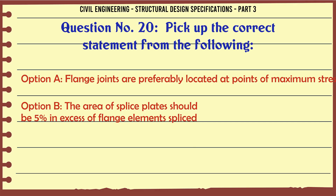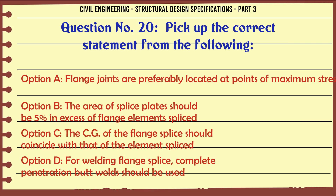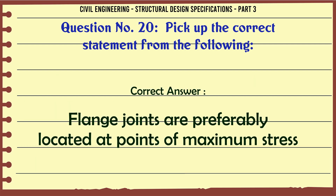Pick up the correct statement from the following: a. Flange joints are preferably located at points of maximum stress, b. The area of splice plates should be 5% in excess of flange elements spliced, c. The CG of the flange splice should coincide with that of the element spliced, d. For welding flange splice, complete penetration butt welds should be used. The correct answer is: flange joints are preferably located at points of maximum stress.